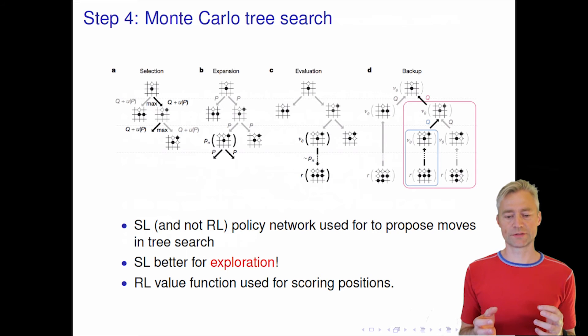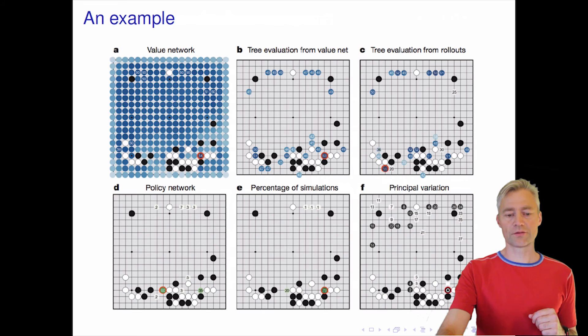The reinforcement learning is more certain about what kind of moves it wants to make, but it's not exploring the space as widely as the supervised learning. This illustrates the exploitation-exploration trade-off that we need in reinforcement learning. But eventually we'll use the reinforcement learning value function to score the actual positions. So that was a walkthrough of the DeepMind system.